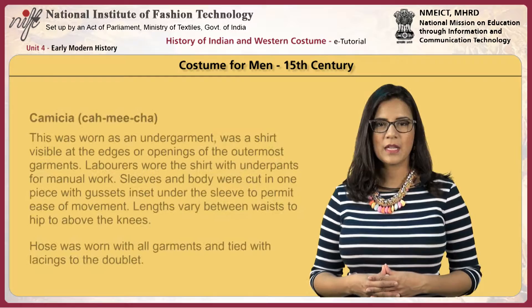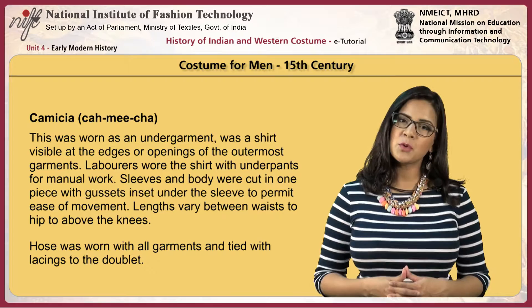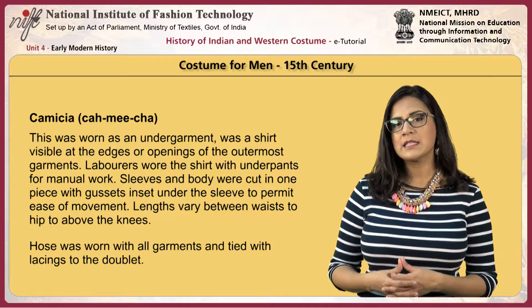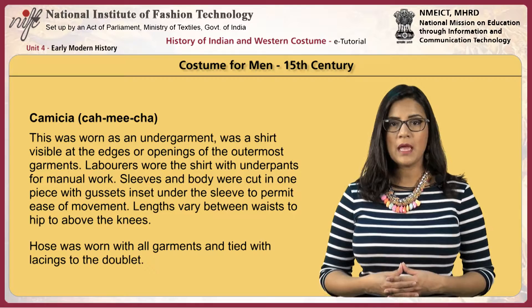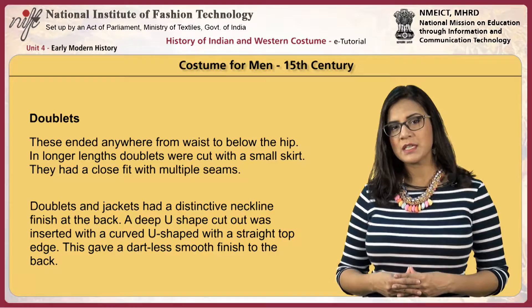The main costumes for men in the 15th century were: the camicia, worn as an undergarment, was a shirt visible at the edges or openings of the outermost garments. Labourers wore the shirt with underpants for manual work. Sleeves and body were cut in one piece with gussets inset under the sleeve to permit ease of movement. Lengths varied between waist to hip above the knees. Hose was worn with all garments and tied with lacings to the doublet. Doublets ended anywhere from waist to below the hips. In longer lengths, doublets were cut with a small skirt. They had a close fit with multiple seams.